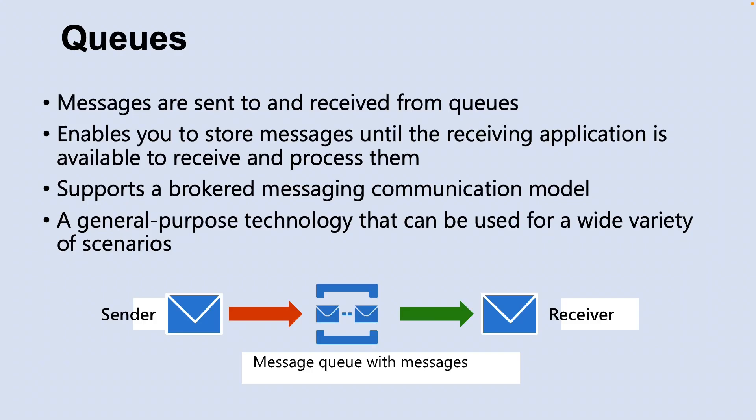Let's learn about queues. Queues offer first-in, first-out message delivery to one or more competing consumers. Receivers typically receive and process messages in the order in which they are added to the queue, and only one message consumer receives and processes each message. A key benefit of using queues is to achieve temporal decoupling of application components. In other words, producers and consumers do not have to be sending and receiving messages at the same time, because messages are stored durably in the queue.